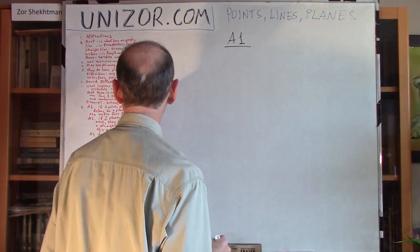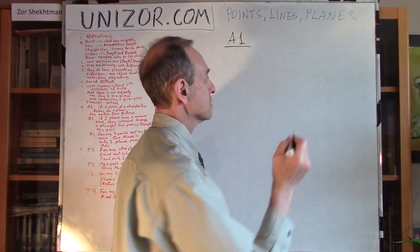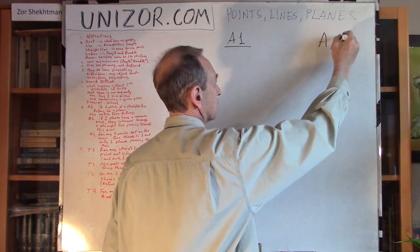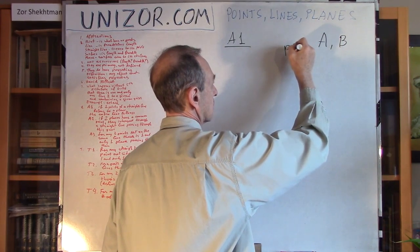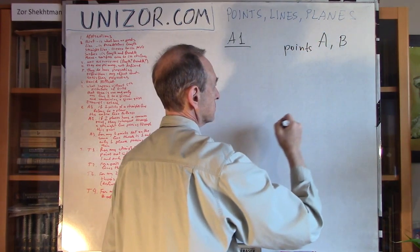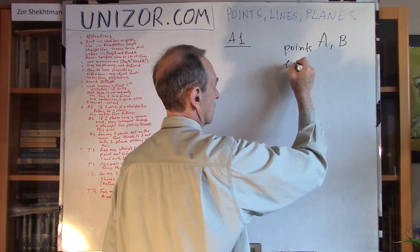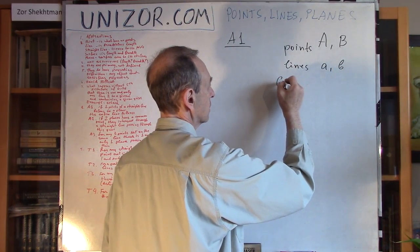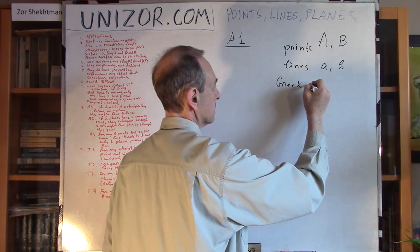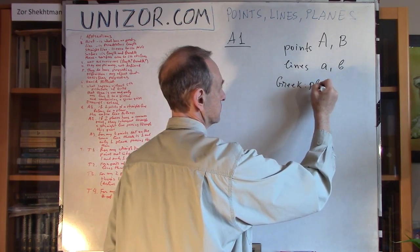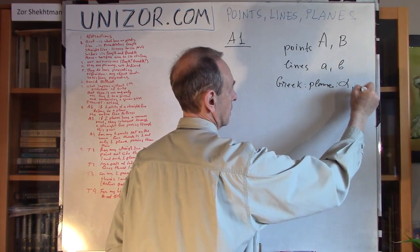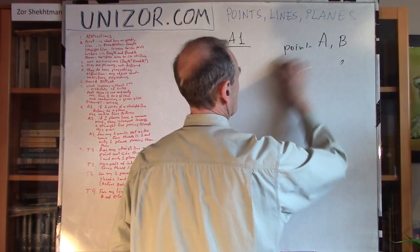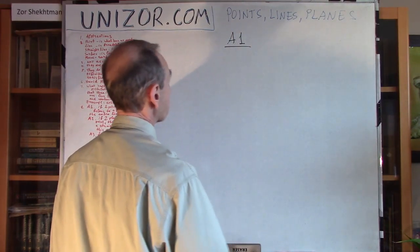Let me just talk about these three important properties, which we would like to accept as axioms. Before I start, let me say that I will try, as much as possible, to use capital Latin letters for points, lowercase for lines, and Greek alphabet for planes.